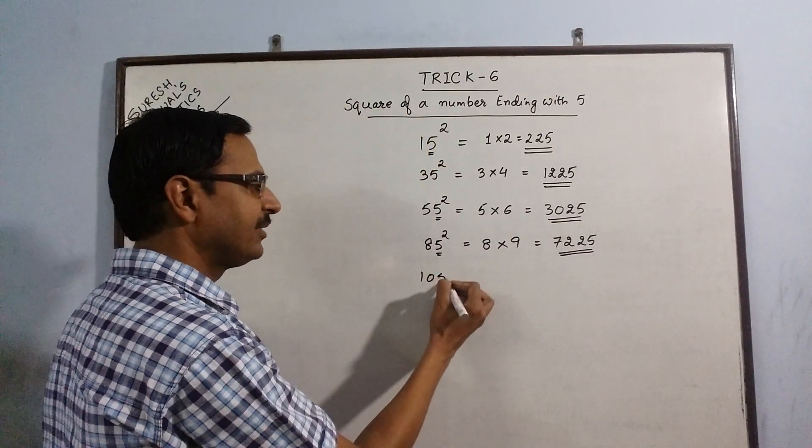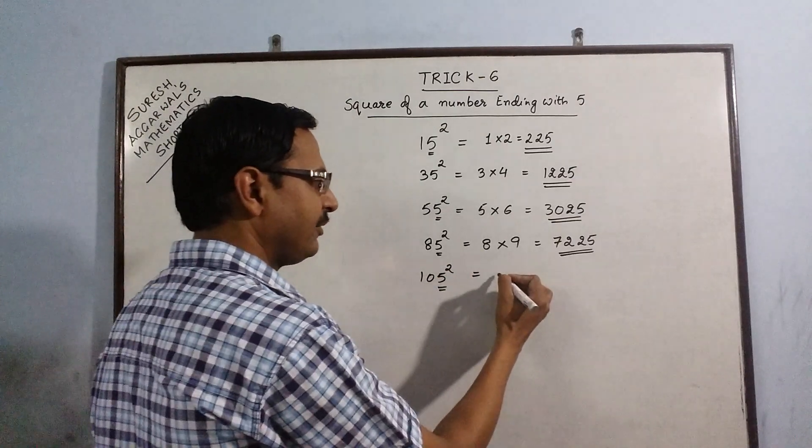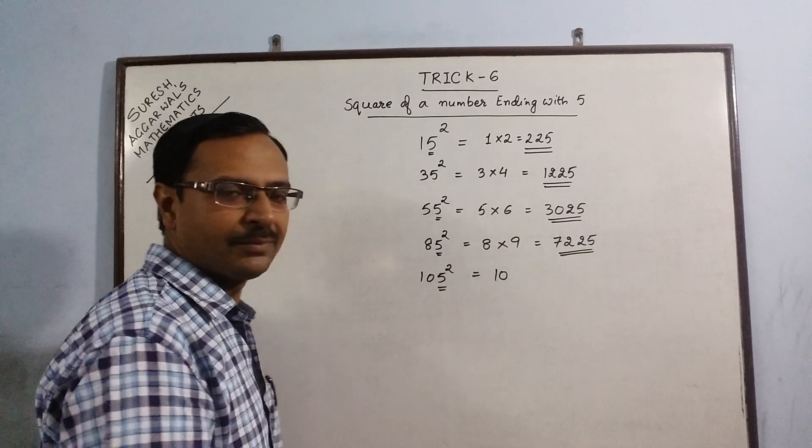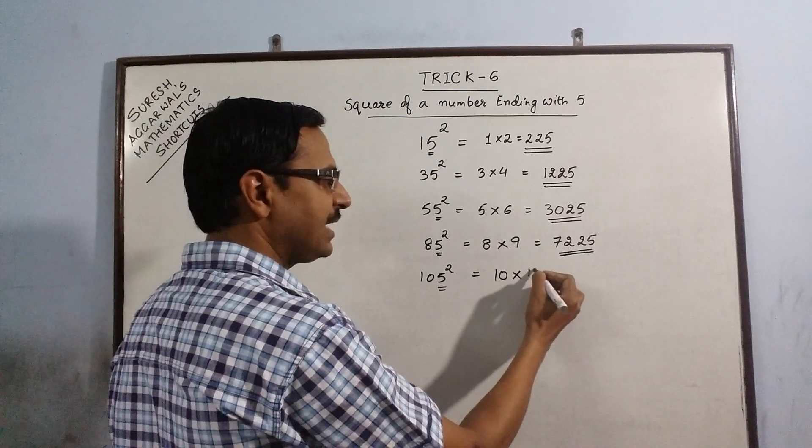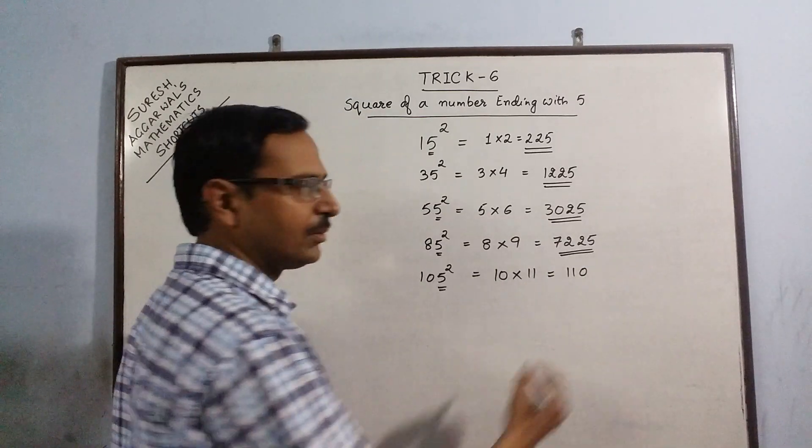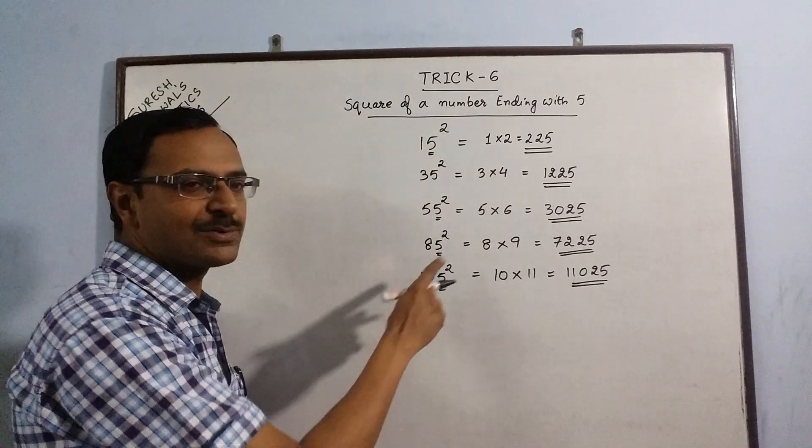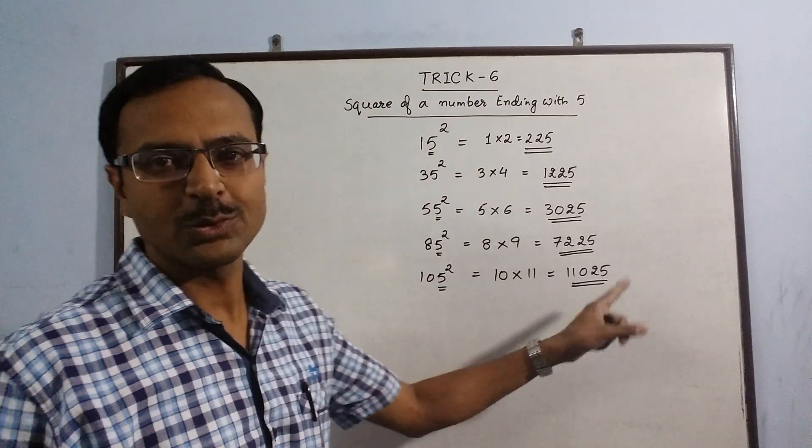105 square. We are left behind with 10. Its successor is 11. 11 into 10 gives us 110. Put a 25. 105 square is 11025.